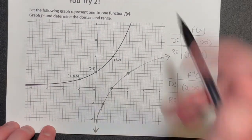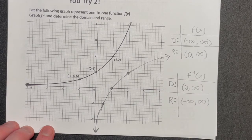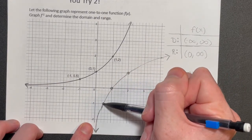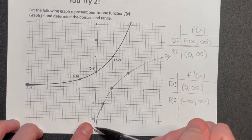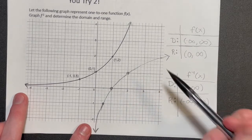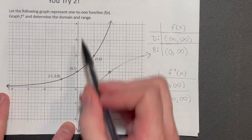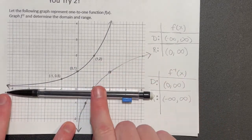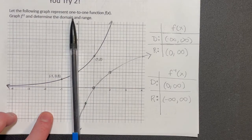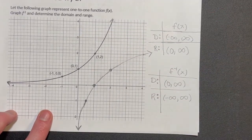For the second example, we have an exponential function that keeps going forever with no stopping points. When we flip it to get the inverse, we get a point at (1, 0), a point at (2, 1), and a point at (1/2, negative 1). The horizontal asymptote at 0 becomes a vertical asymptote at 0, which affects domain and range. Originally the domain was negative infinity to positive infinity and the range was 0 to infinity. For the inverse, the domain becomes 0 to infinity and the range becomes negative infinity to positive infinity.